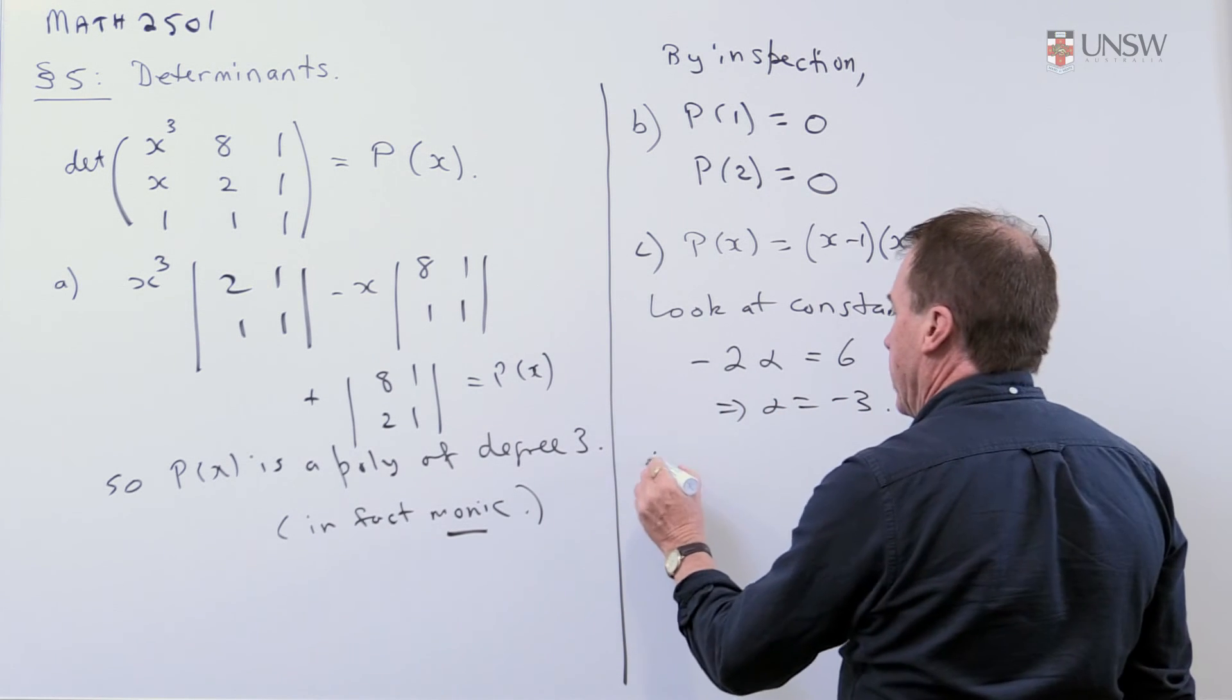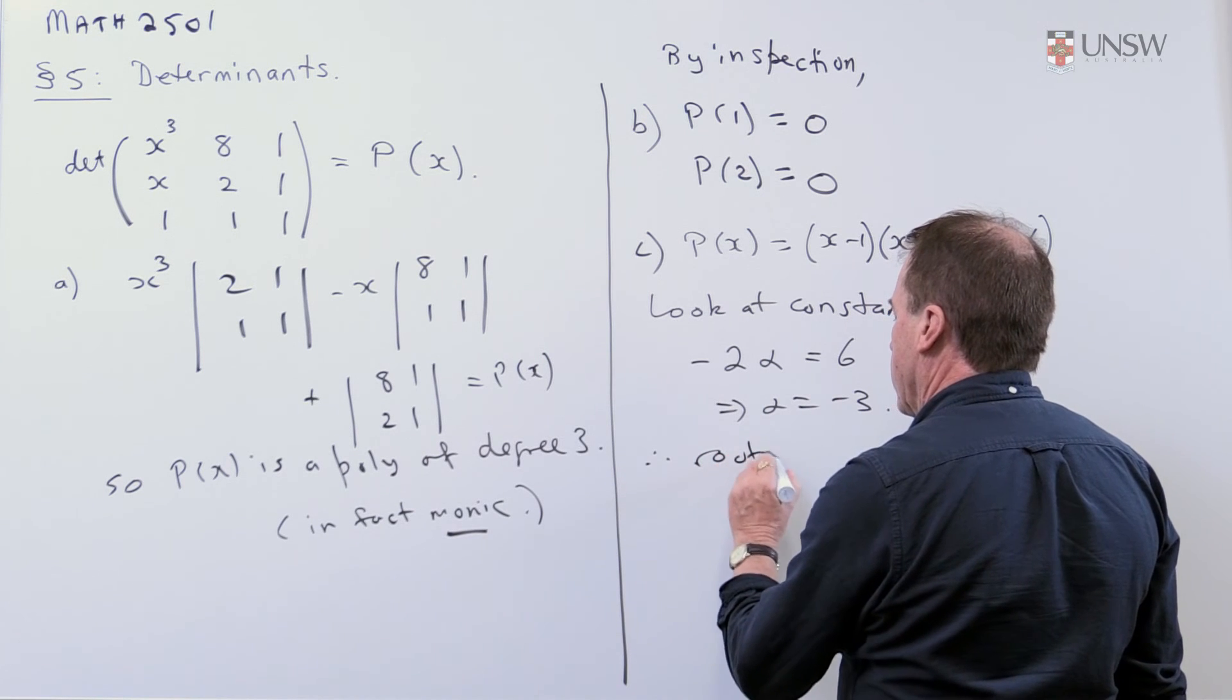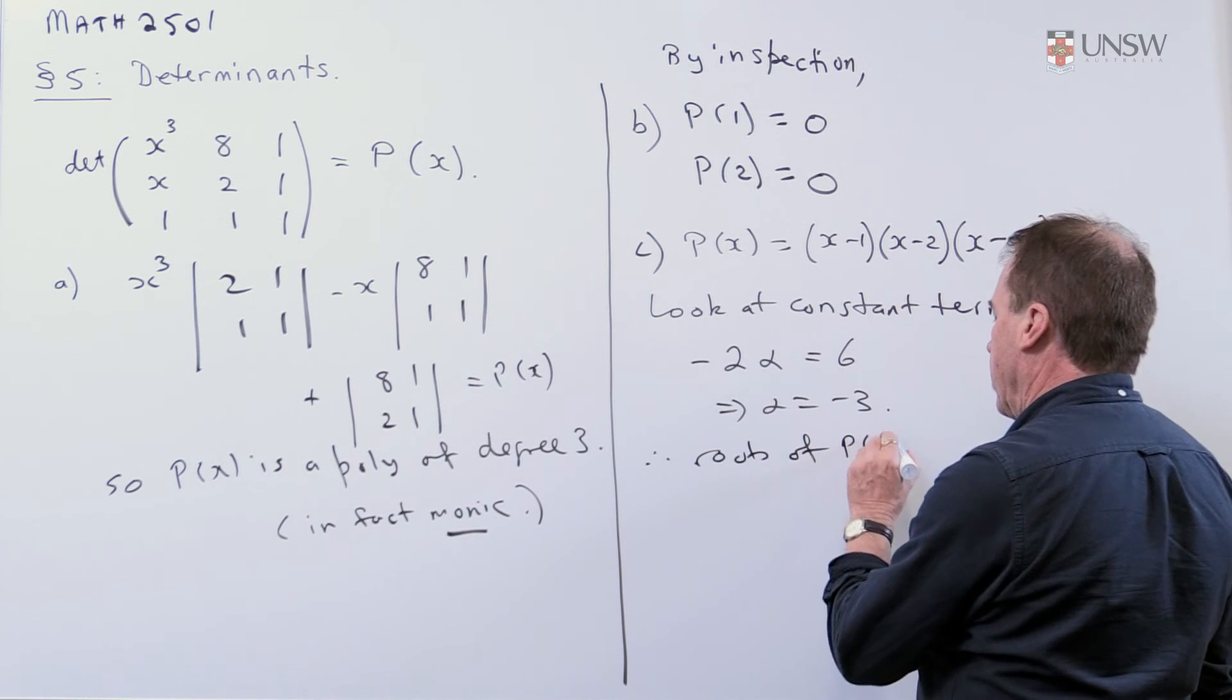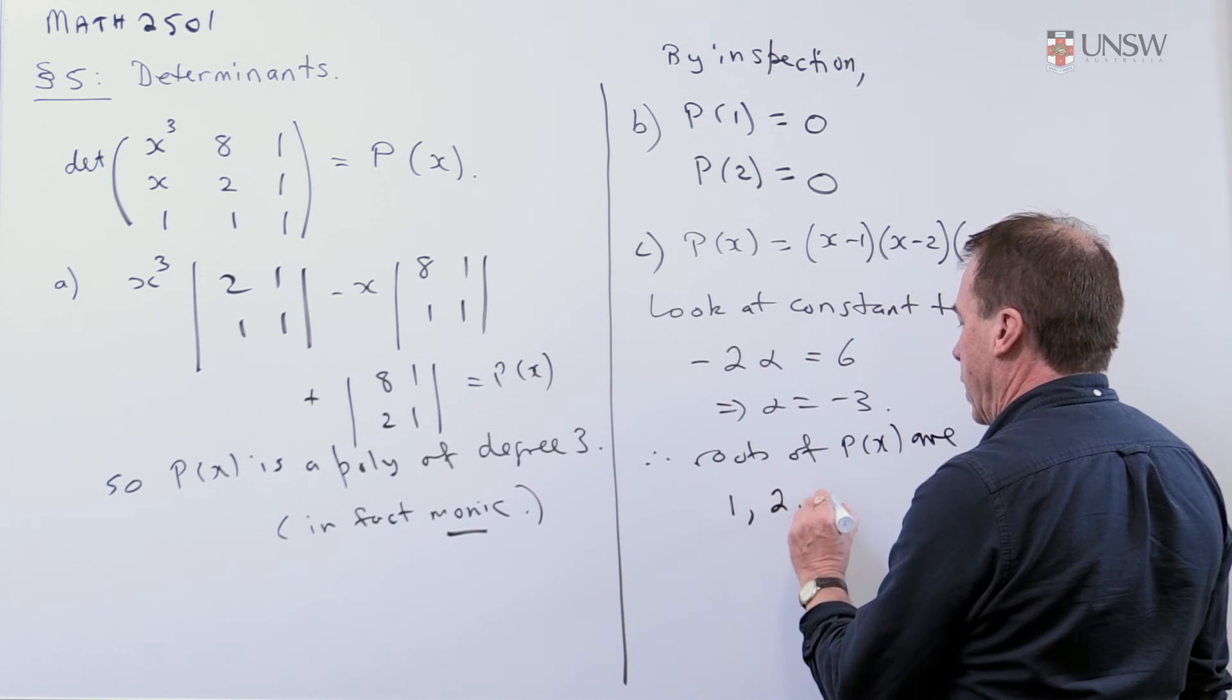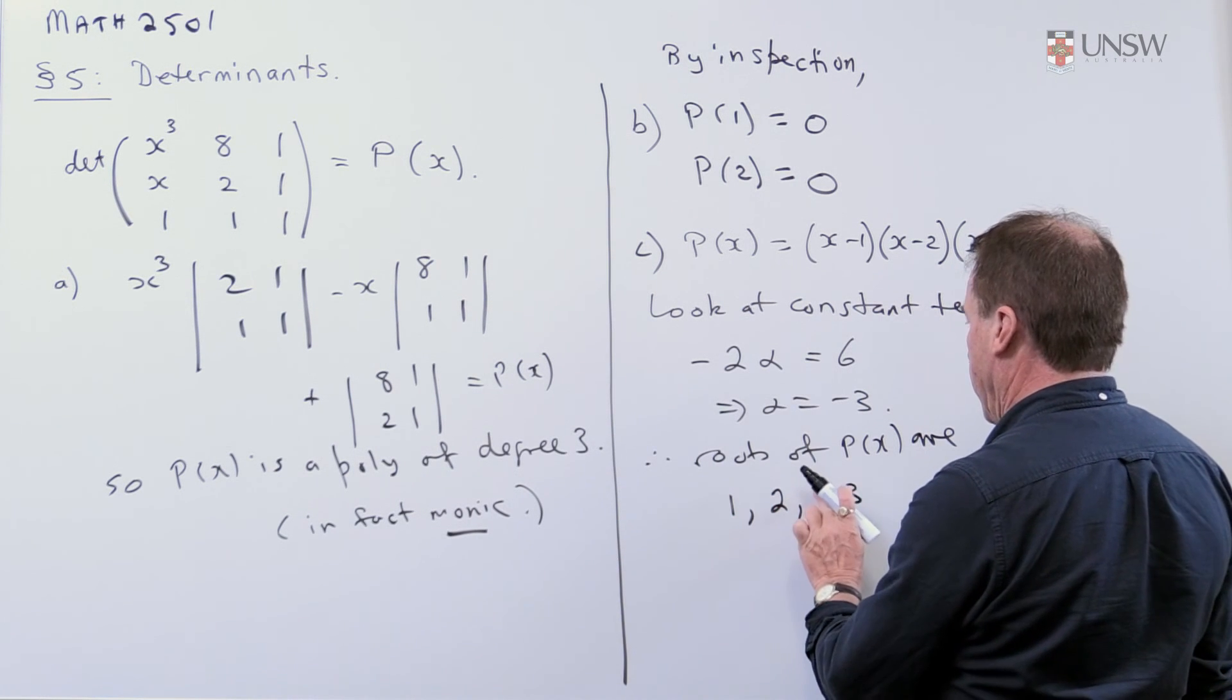So, to finish off the problem, it asks you for the roots. So, the roots of this polynomial are going to be 1, 2, and minus 3.